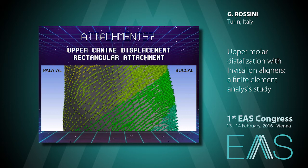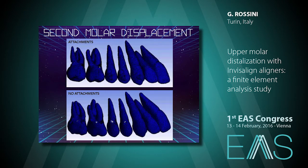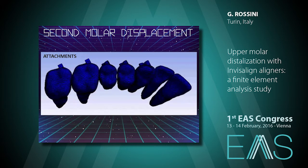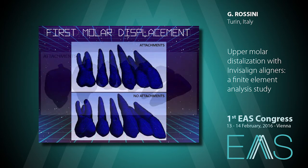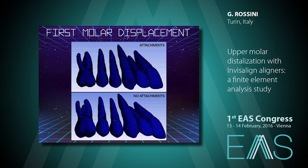We then proceeded with the simulation of sequential distalization, starting from second molar displacement. With attachments, the anchorage load falls on the canine, which goes buccal. Without attachments, the entire frontal group from canine to central incisor goes buccal. Also, the aligner of the upper first molar gets some deformation and experiences easier rotation, but without great effects on the tooth. Moving to the upper first molar, we can see rotation of the canine and upper first molar with attachments, while without attachments there is proclination of the upper incisors.